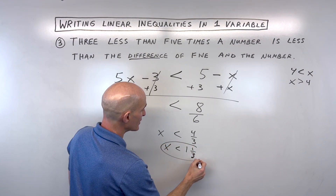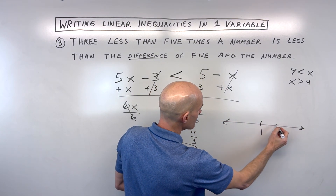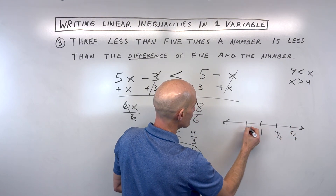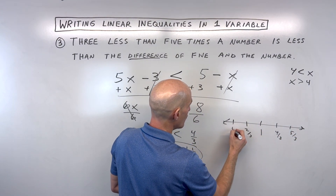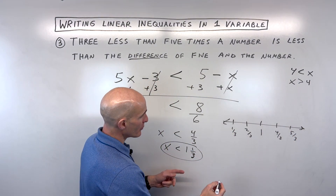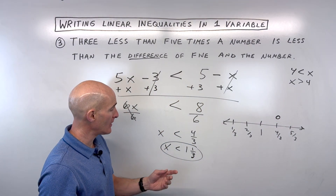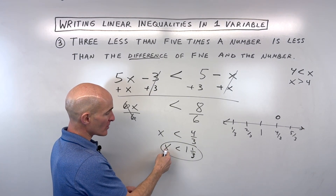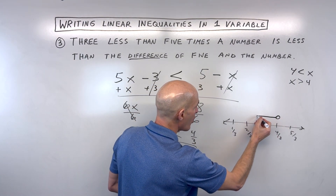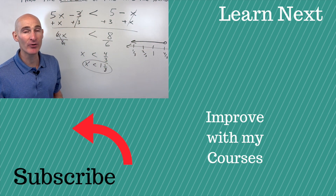Now graphing on the number line — counting by thirds: here's one-third, two-thirds, one, four-thirds (one and one-third), five-thirds. x is less than four-thirds, so less than but not equal to — it's an open or hollow circle, not including that point. The arrow points to the left. That works because the variable is on the left, or you can think: x is less than, so as numbers get smaller we go left. That's the set of solutions graphed on the number line.